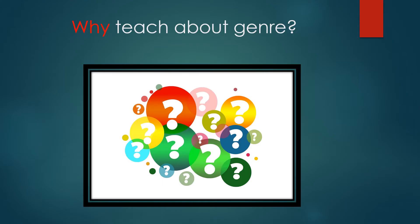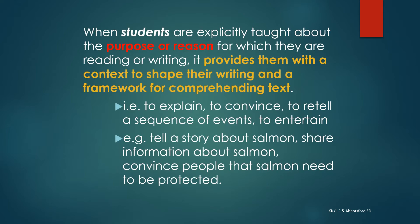So why is this important? Explicit instruction around genre allows students to be aware of the purpose for which they are reading or writing. It provides them with a context to shape their writing and a framework for comprehending text. In other words, a student will know if they are explaining, convincing, or retelling a sequence of events, or simply entertaining. They will also know, if they are reading a text, the author's intent.